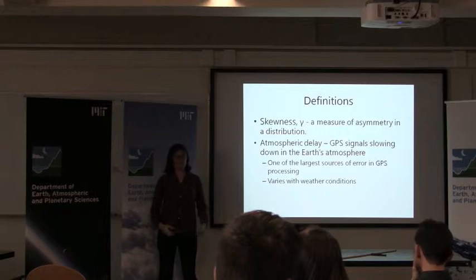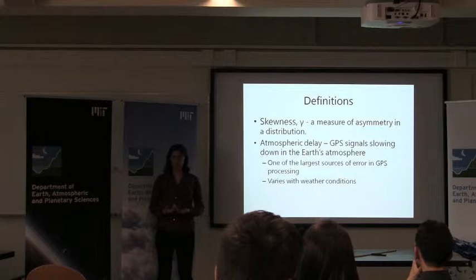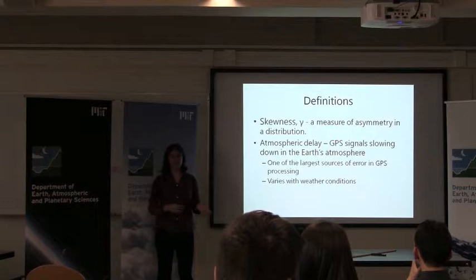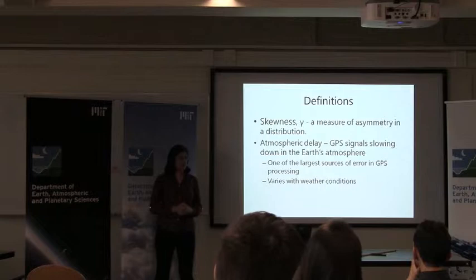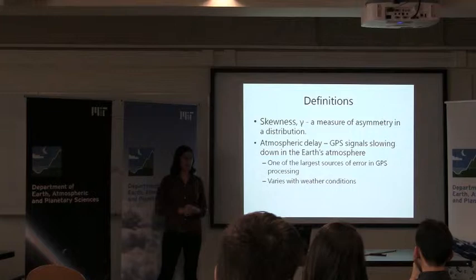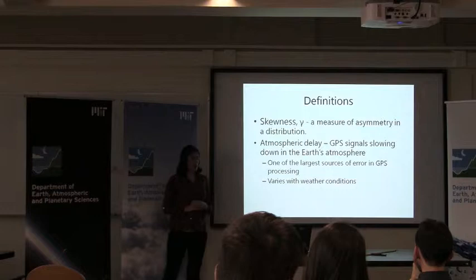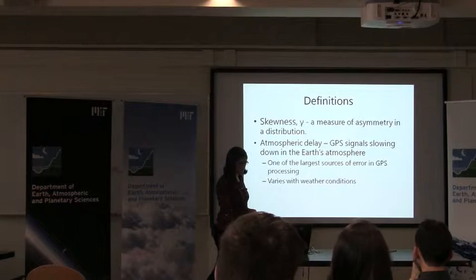A couple of useful definitions: one is skewness, which is a measure of the asymmetry in a distribution. For a Gaussian, which is symmetric, the skewness is exactly zero. For something with a stronger tail on one side, the skewness is non-zero — positive if the tail is to the positive side, negative if to the negative side. The other concept is atmospheric delay: GPS signals are slowed down through the Earth's atmosphere as they propagate down, and modeling this error is one of the largest sources of error in GPS position estimates. It's difficult because atmospheric delay varies with weather, constantly changing from place to place and in time.